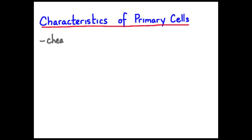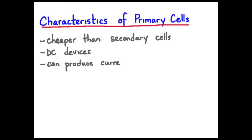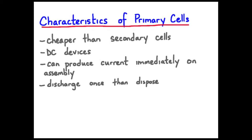So we looked at a Daniel cell, a cell that could be recharged. We're going to look at primary cells and their characteristics. These are cells that cannot be recharged. Typically they're cheaper than secondary cells. They're DC devices which means that current flows in one direction through them and when they're assembled with their chemicals they're ready to go off the shelf. You only get one discharge from them and once they're fully discharged you have to dispose of them properly.